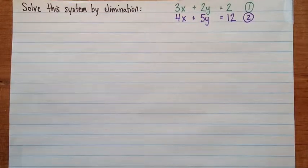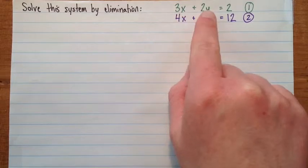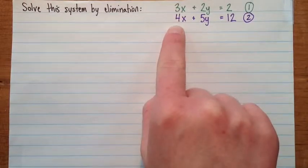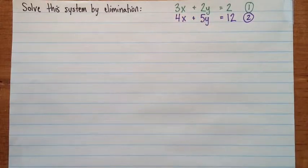So in the first video on elimination, I said the easiest case is when you've got one of the variables, like either x or y, that has the same coefficient in both equations. And that coefficient can be positive or negative. But here we've got 3x and 4x, and 2y and 5y. So we don't have that in this case.